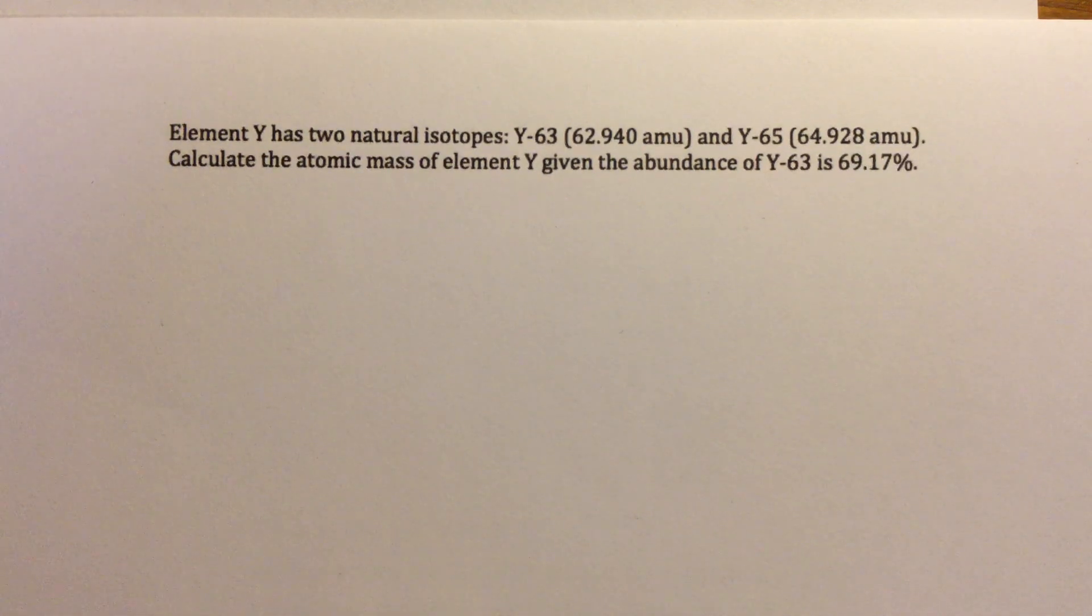So this question reads, element Y has two natural isotopes, Y-63 which has a mass of 62.940 amu, and Y-65 which has a mass of 64.928 amu. Calculate the atomic mass of element Y given the abundance of Y-63 is 69.17%.